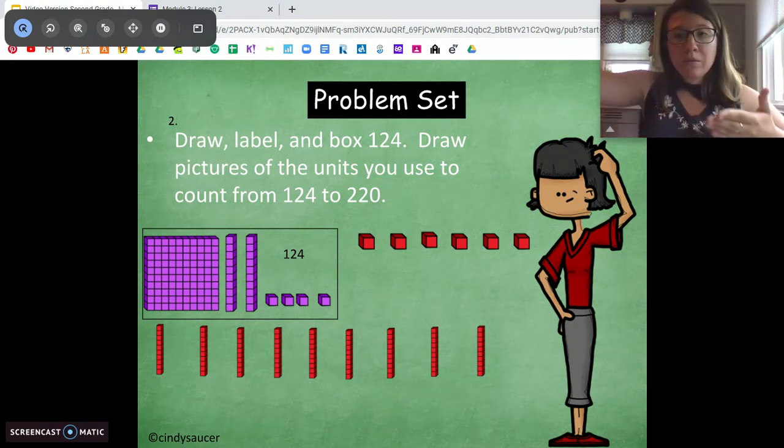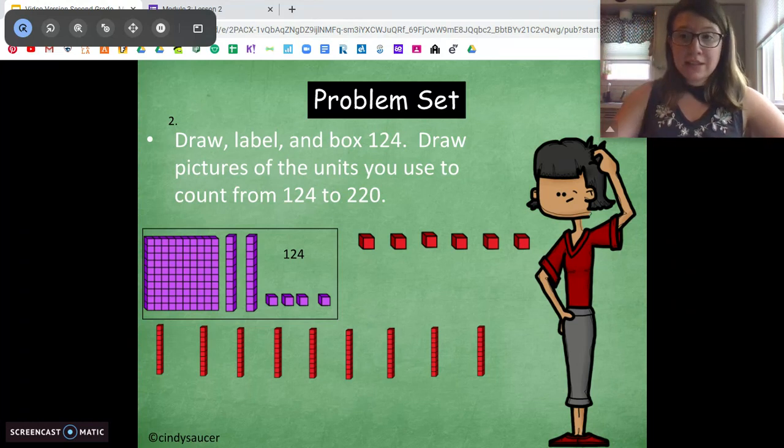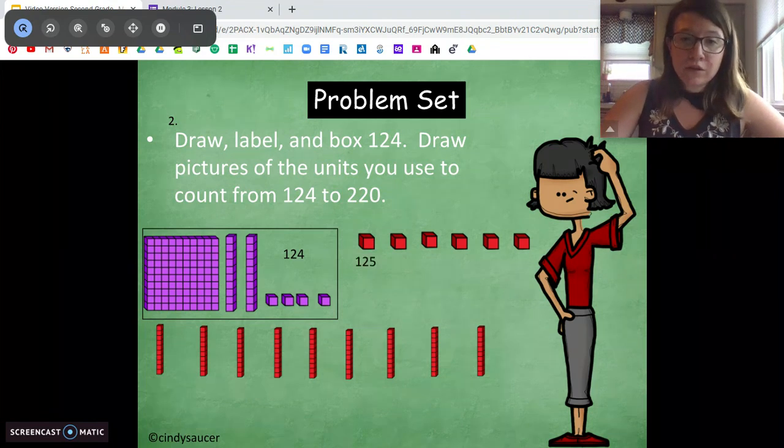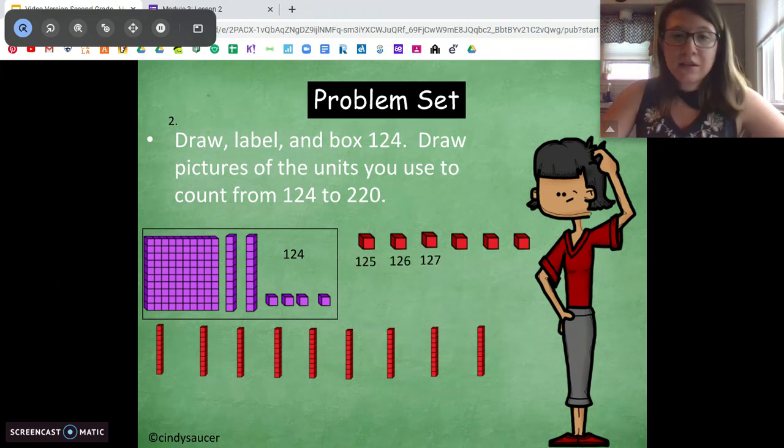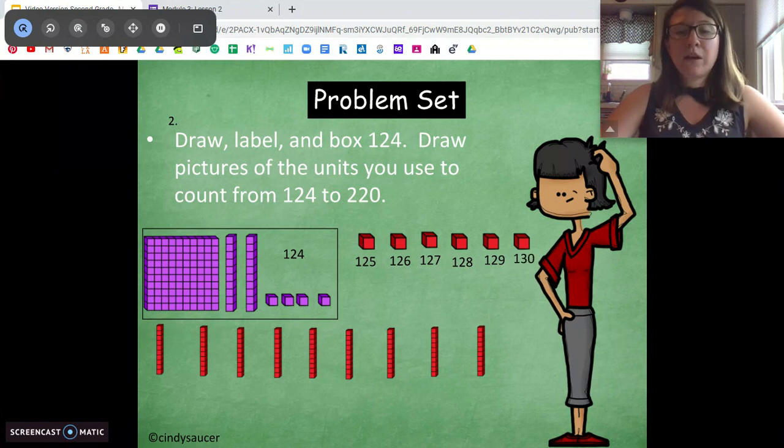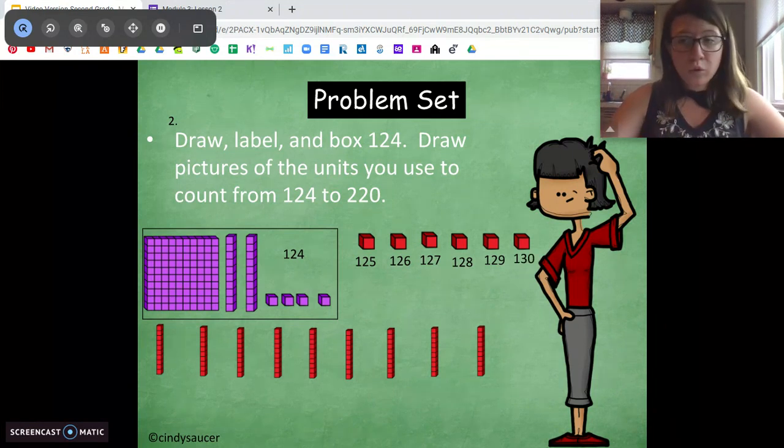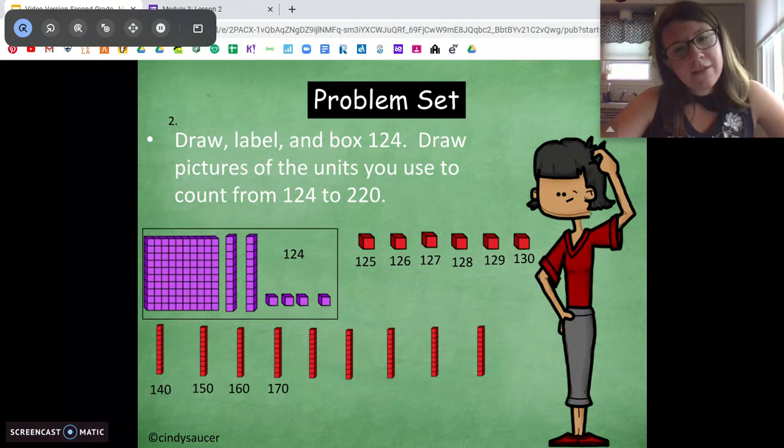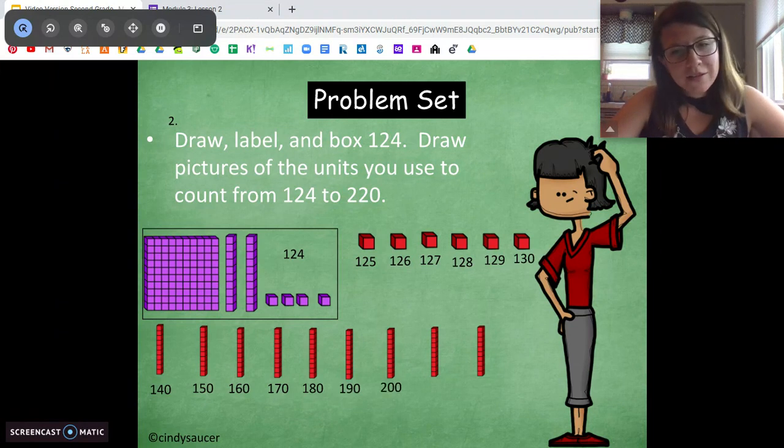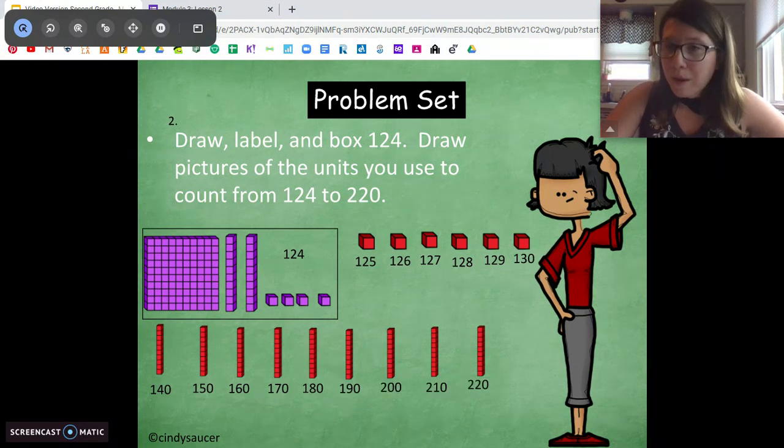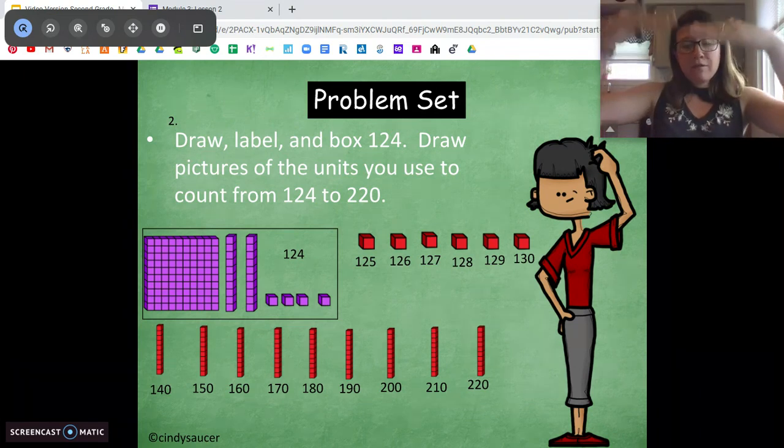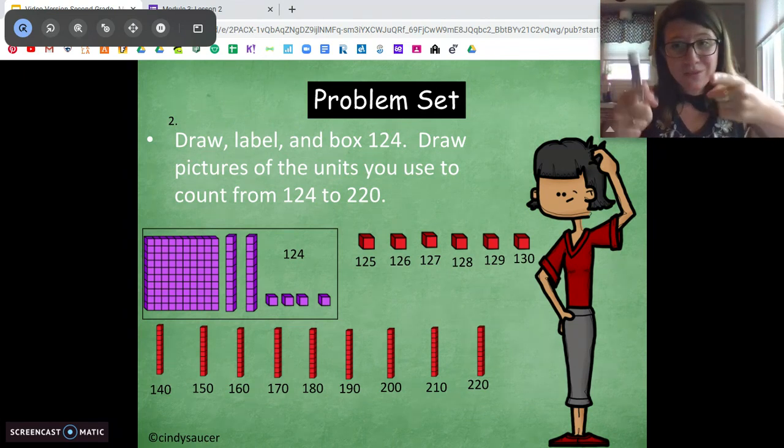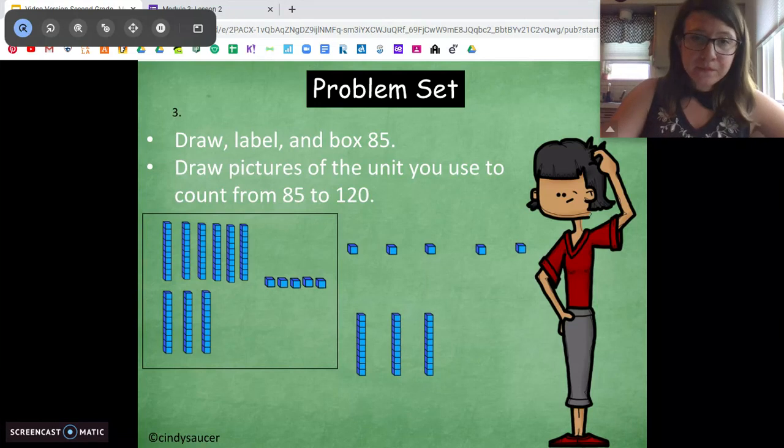So we have 124. We're going to count on by tens first because that's going to be easier for us to get to 220. So we're at 124. They did it backwards for me. Totally cool. Whatever makes sense in your brain. 140, 150, 160, 170, 180, 190, 200, 210, 220. It'll probably be easier for you to get to that 10 first before you start counting by tens. So if this makes more sense to you, do it this way. Alright. We're going to skip that one for now because I want us to get into our exit ticket.